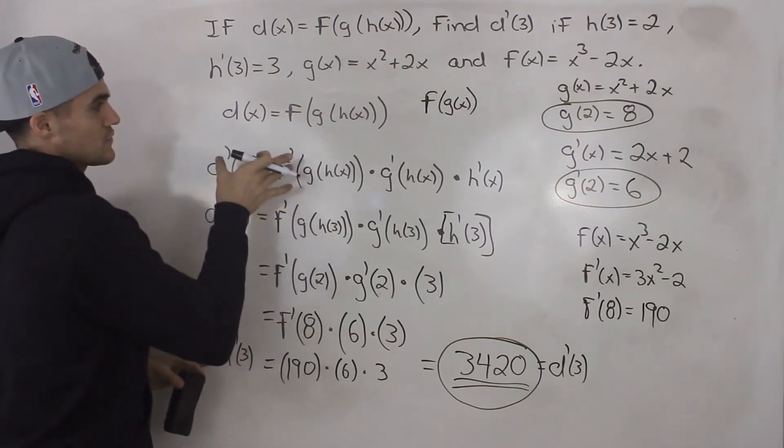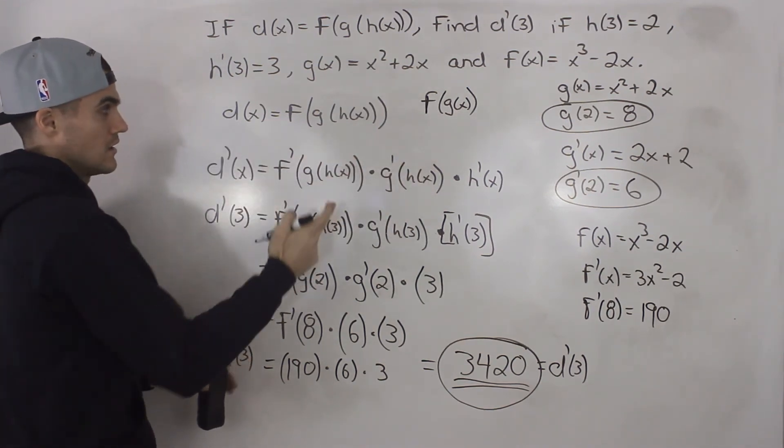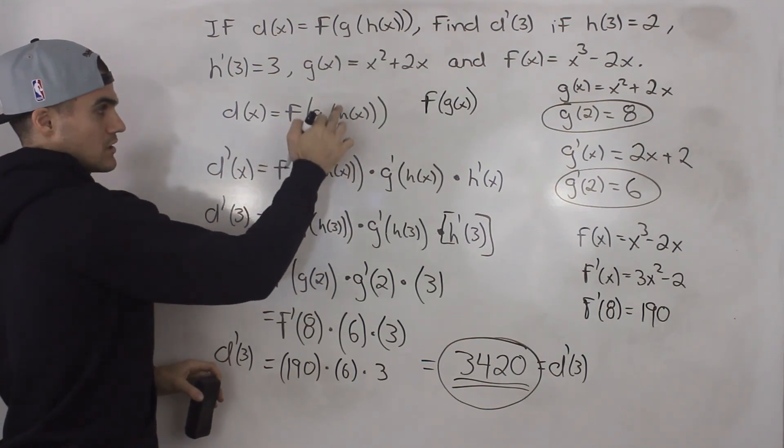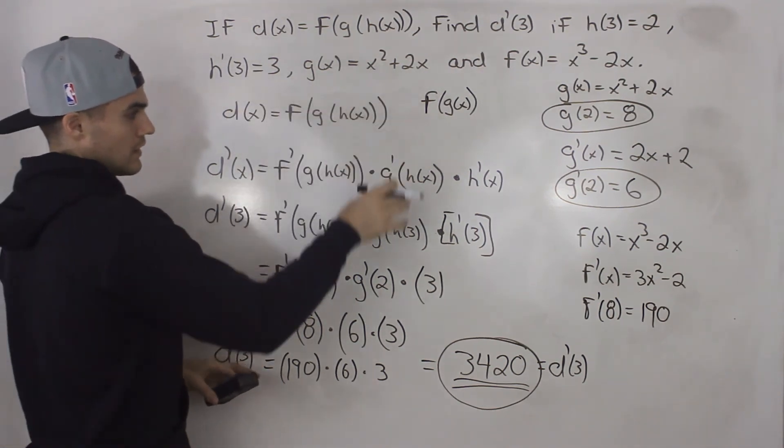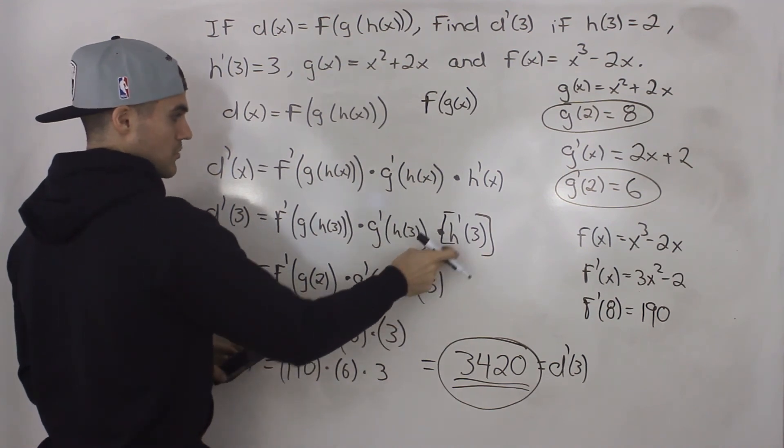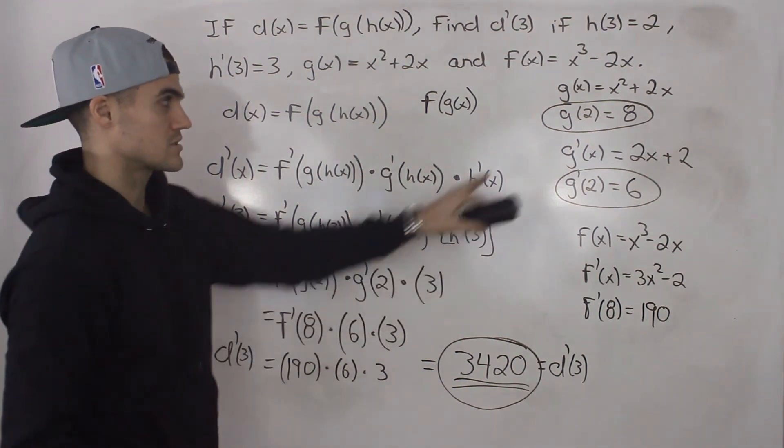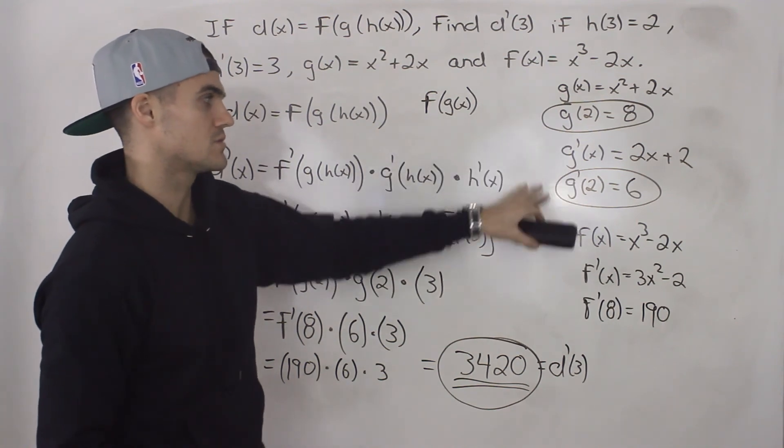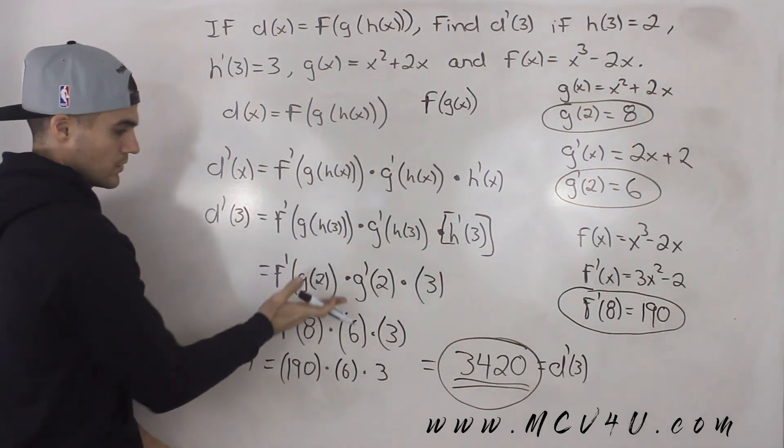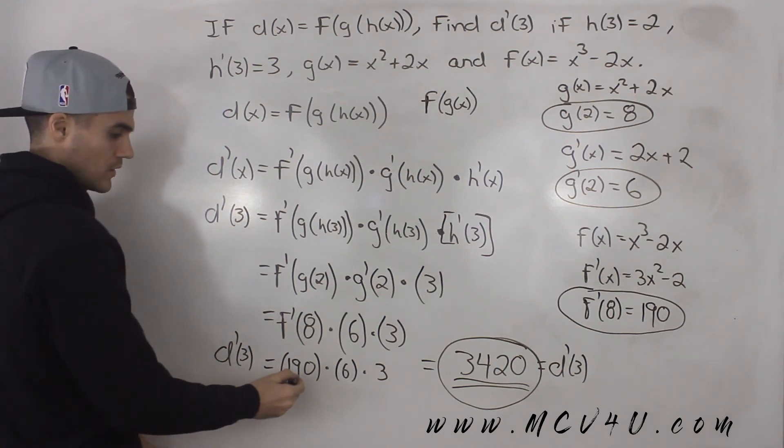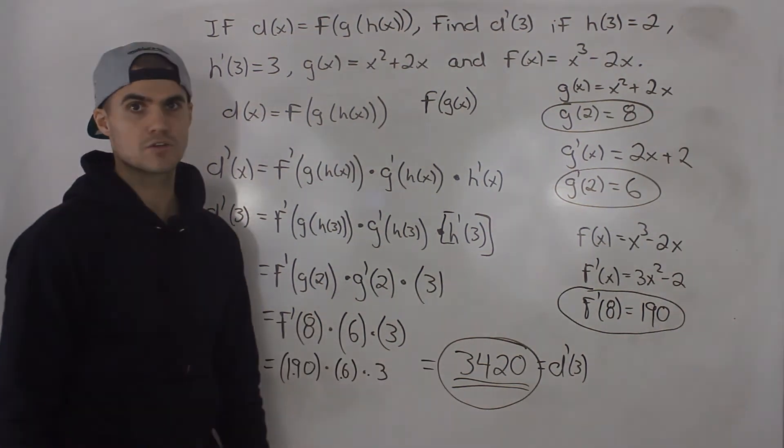So when you get a question like this, first thing you want to do, find a general expression for the derivative like we did here. We use the chain rule twice for all of these functions for f, g, h. And then what you do is you look at the information you're given, and then you just start making substitutions. So h prime 3, h of 3. And then a lot of times you're not going to be given expressions, but you'll be given the functions. So then you got to do some side work like we did here, finding g of 2, g prime of 2, and then f prime 8. And then you just make all your substitutions. You keep going down the ladder, and you end up getting to a point where you're just multiplying a bunch of numbers. And then when you multiply those numbers, 3,420, that's your final answer.